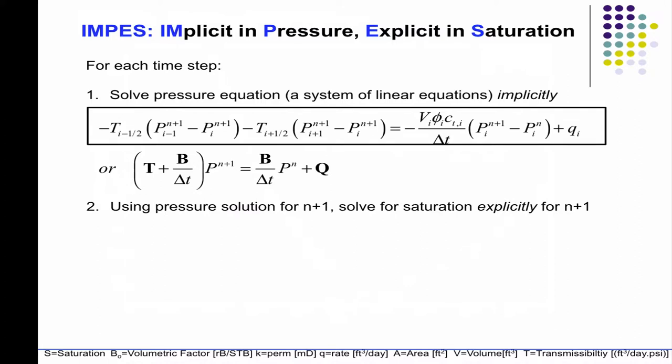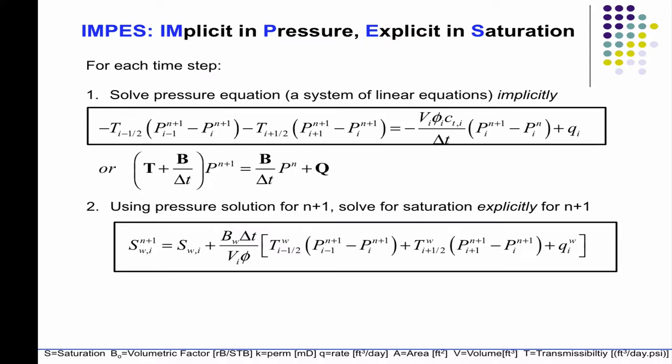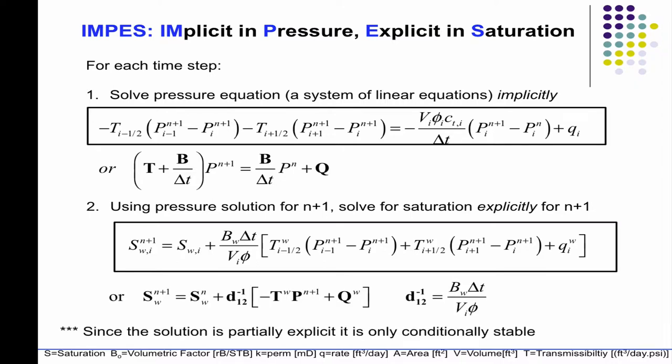Using the pressure solution, solve for the saturations. We're going to take the pressures that we get, the P n plus 1s, that will go into these equations with these transmissibilities, and we're going to use the old saturation. At the first time step, the old saturation is the initial saturation, 0.2, the saturation of water. So we'll update that.